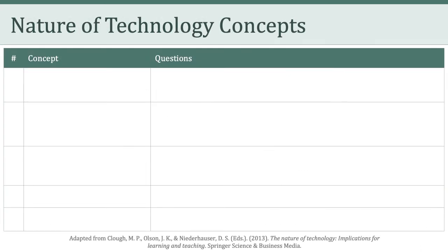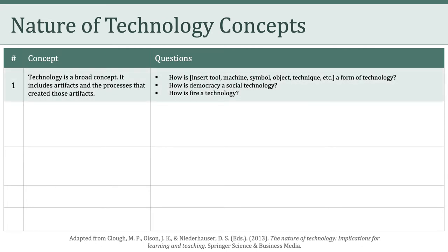This brings us to 10 concepts related to the nature of technology. The first concept is that technology is broad — it includes artifacts and the processes that created those artifacts. Examples of technology include, among other things, tools, machines, symbols, objects, and techniques. Some questions we can continuously ask ourselves: How is Google a form of technology? How is democracy a social technology? How is fire a technology?